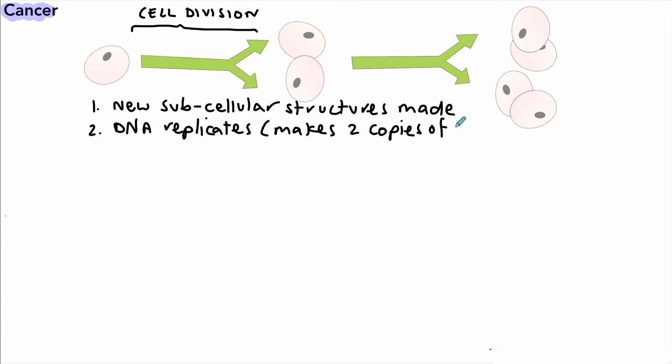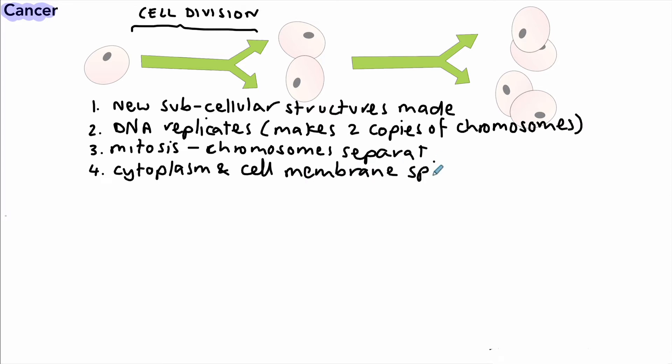We then have the DNA which replicates itself to make two copies of chromosomes. The chromosomes, during mitosis, line up along the nucleus and get separated to two separate parts of the cell. And then the cytoplasm and cell membrane split off to make two new cells. And you can see a little summary of that in the diagram above.